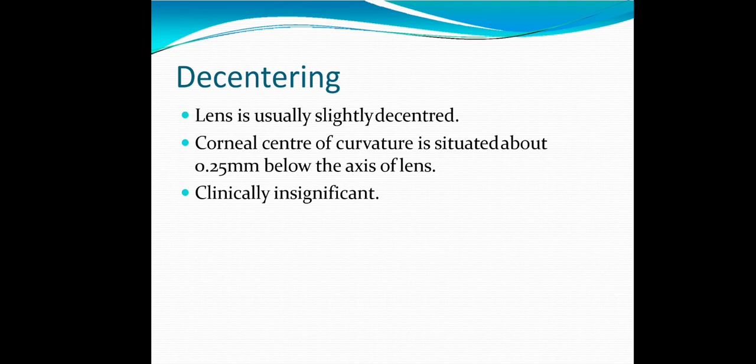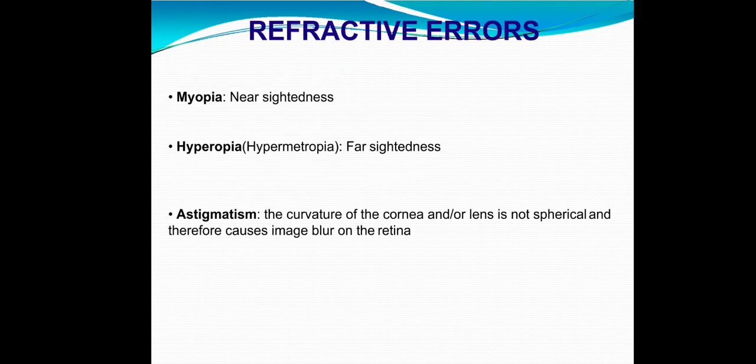Decentration: lens is usually slightly decentered. Corneal center of curvature is situated about 0.25 mm below the axis of lens, clinically insignificant. Refractive errors may also be included in the optics of eye.